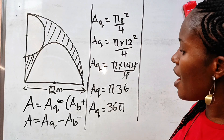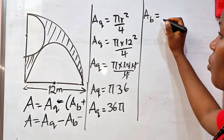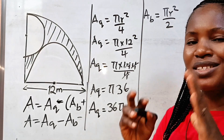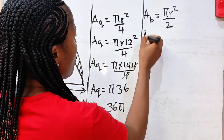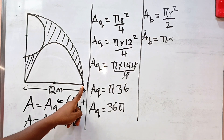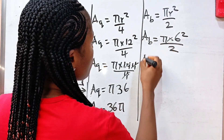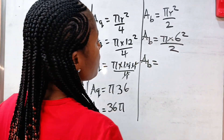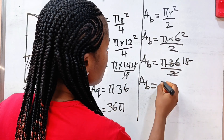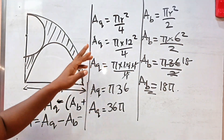Now let's solve the area of the big semicircle. Since a semicircle is half a circle, the area is πr²/2. The radius of the big semicircle is half of 12, which is 6. So Ab = π × 6² / 2 = π × 36 / 2 = 18π square meters.